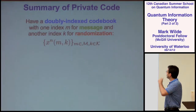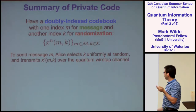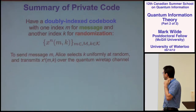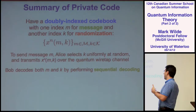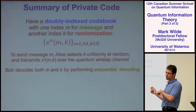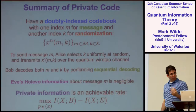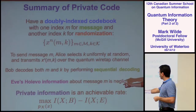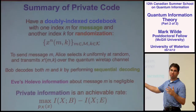A code exists. Quick summary: we have this doubly-indexed codebook with a message variable and a randomization variable. If Alice wants to send message M, she selects K uniformly at random and transmits the classical code word through the quantum channel. Bob decodes both M and K by sequential decoding. We can guarantee that Eve's Holevo information about the message is asymptotically negligible, and by optimizing over the choice of distribution, this quantity is the rate at which Alice can send messages to Bob privately.